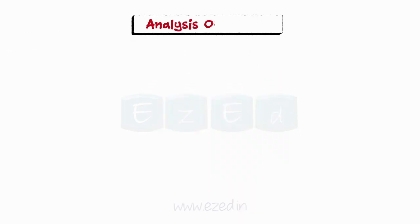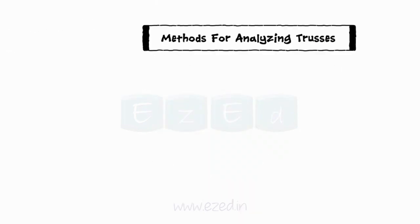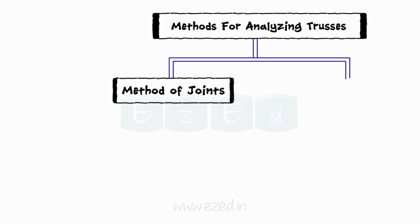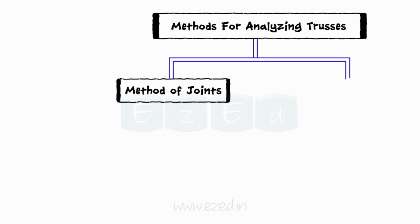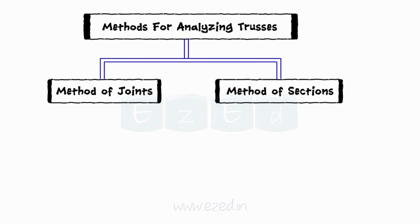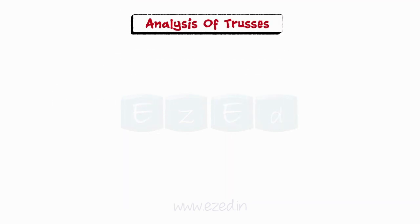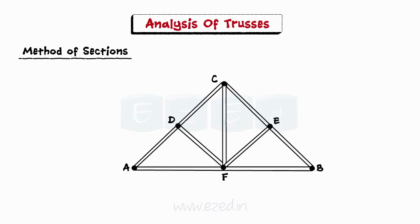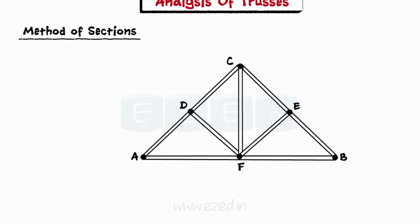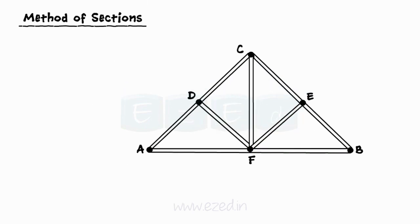Previously, we have learned about analysis of trusses by method of joints. In this topic, we will learn to analyze a truss by method of sections. Method of sections offers a quick solution to any required member, unlike the method of joints, where we have to solve various joints one by one to reach the required member.